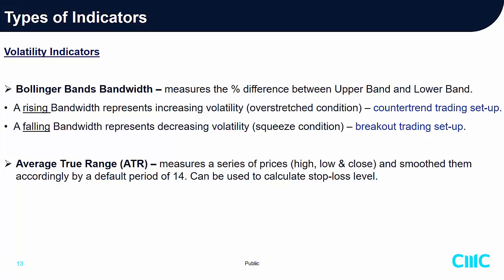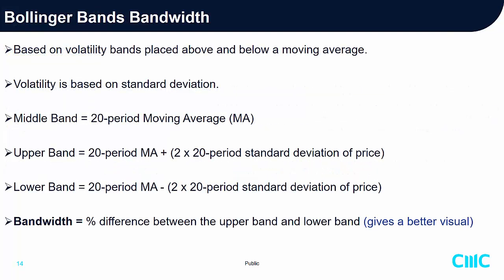Bollinger Bandwidth is based on a volatility band placed above and below a moving average, where volatility is calculated using standard deviation. The middle band is a 20-period moving average. The upper band is the 20-period MA plus two times the 20-period standard deviation of price. The lower band is the 20-period MA minus two times the 20-period standard deviation of price. The bandwidth is the difference between the upper and lower band — an indicator that can be plotted in the CMC charting platform for better visual appeal.